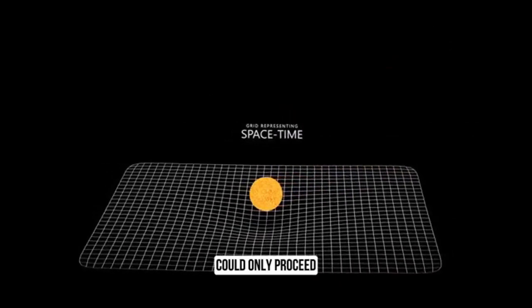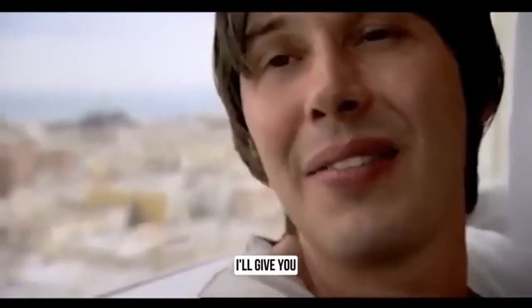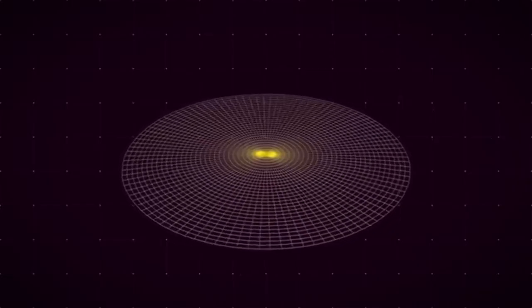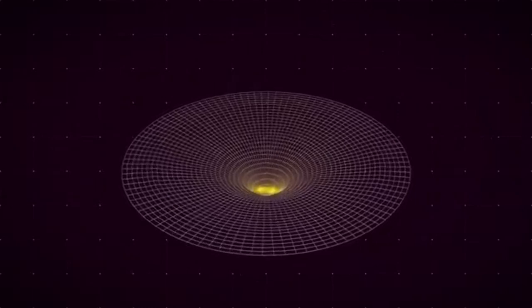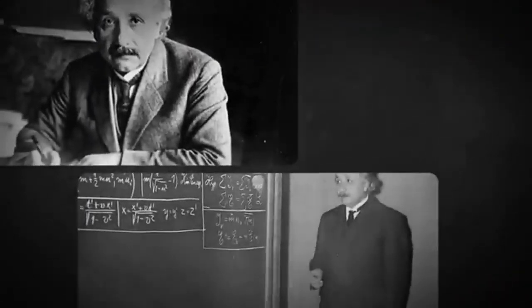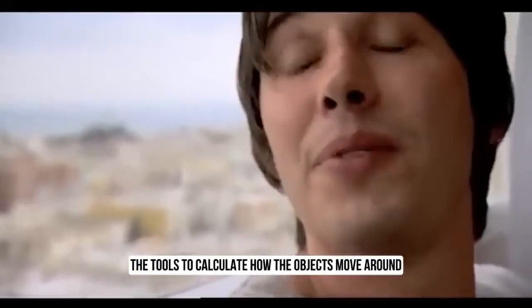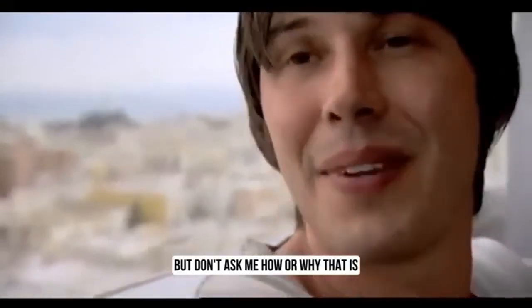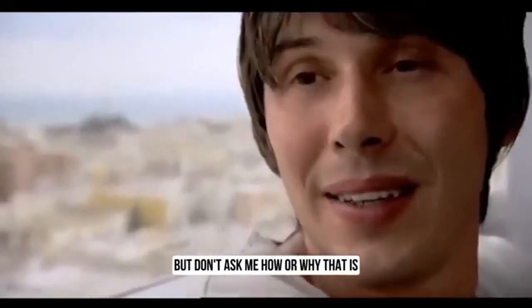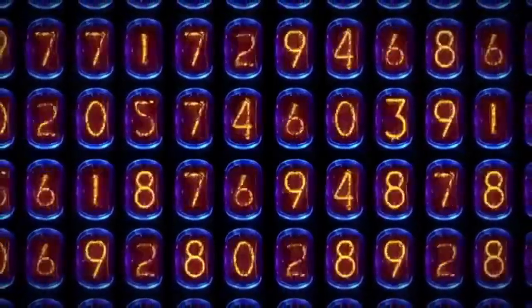Special relativity introduced the idea that the speed of light is constant for all observers, about 299,792,458 meters per second. This concept defies everyday experience, where speeds usually add up when in motion. It's as if the universe has a built-in speed limit, the speed of light. Special relativity also shows that simultaneous events may not be simultaneous for everyone. If two events occur at different locations and you're in motion relative to those events, what you see as happening at the same time might not be simultaneous for someone else. This challenges our conventional notion of time.